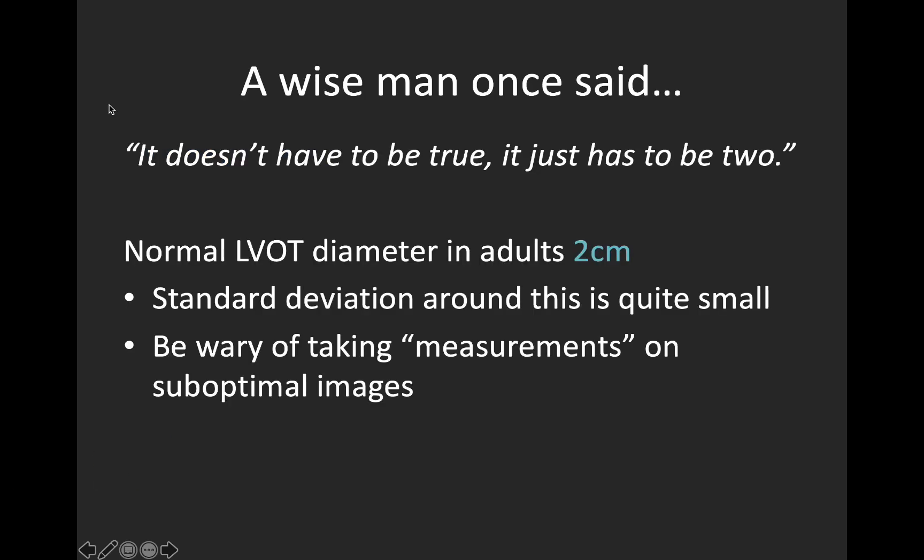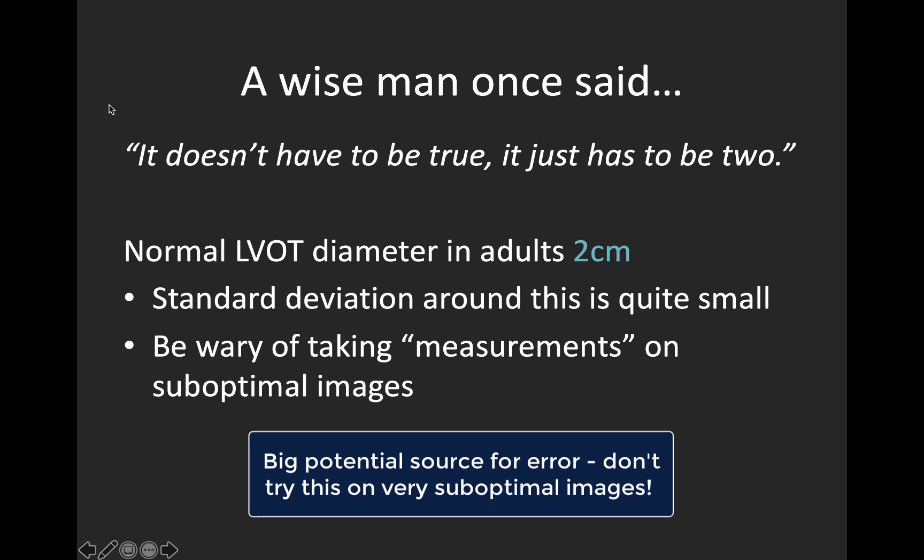A POCUS colleague coined the tongue-in-cheek term: 'it doesn't have to be true, it just has to be two.' This is somewhat of a joke, but highlights the fact that the normal LVOT diameter in adults is about two centimetres, and the standard deviation around this is actually quite small. You want to be quite wary of measurements that seem vastly different from two centimetres if taken on suboptimal images. The LVOT diameter measurement is really the biggest potential source of error in this whole cardiac output calculation, and some people favour omitting this step entirely and just using the VTI as a surrogate for stroke volume. If the measurement seems very off, consider repeating it or potentially just using VTI as a surrogate.